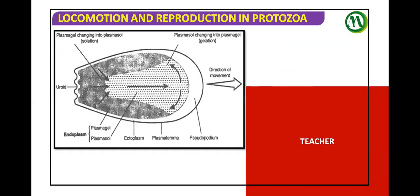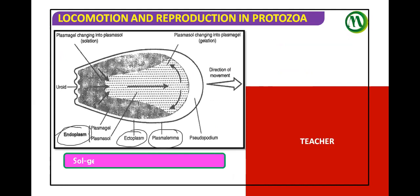This theory was explained by Pantene and Mast. Now let us correlate the gel and Sol. We need to recognize the plasma gel and plasma Sol — the ectoplasm, plasma lemma, ectoplasm, and endoplasm, as seen here.